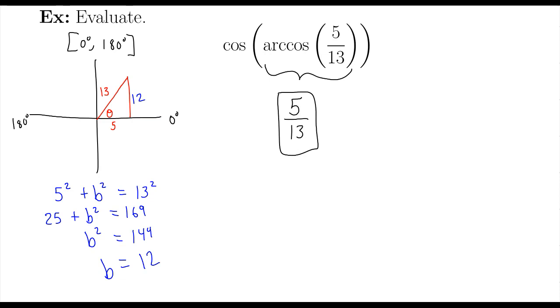Now, once again, these two matched up. That will not always happen, so we need to work through it just in case we end up with one of those problems where it does not work out nicely like that. But for now, we're good. 5 over 13 is the simplified version of cosine of arc cosine of 5 over 13.